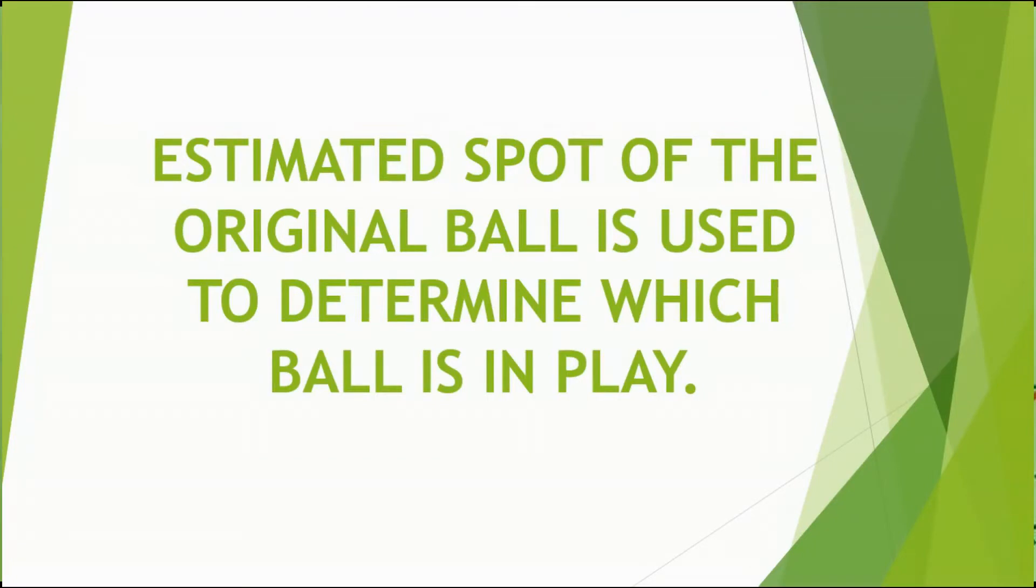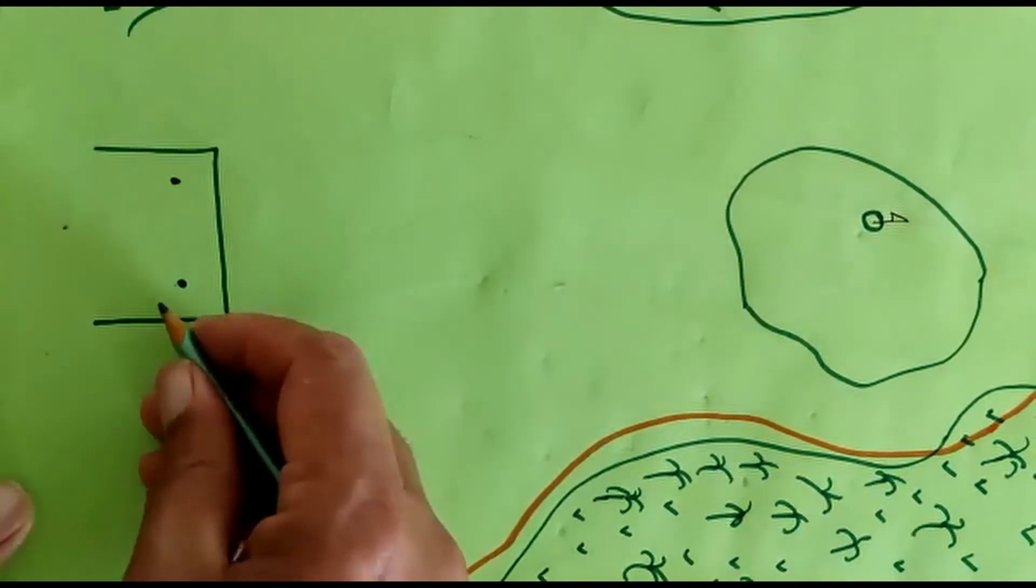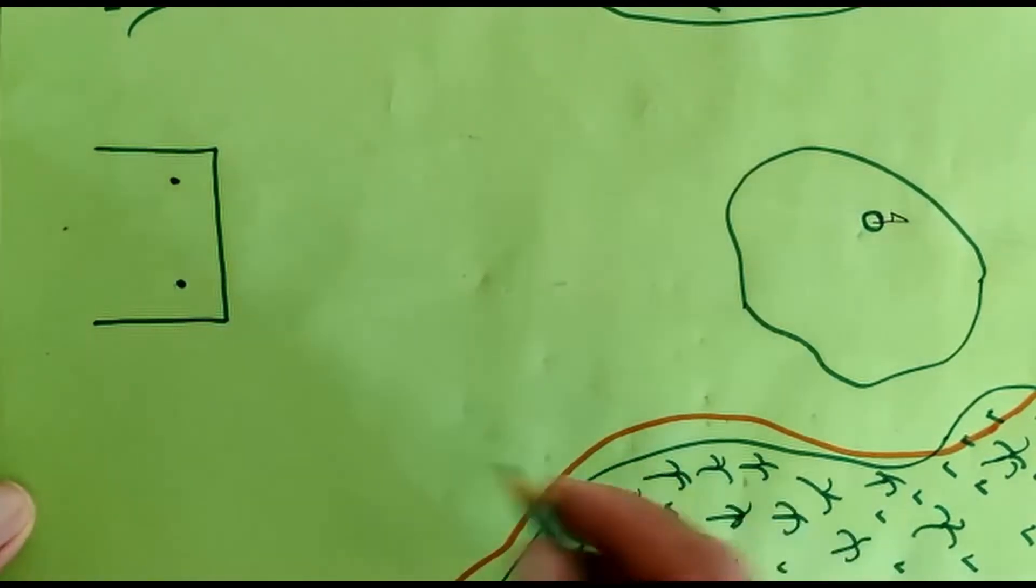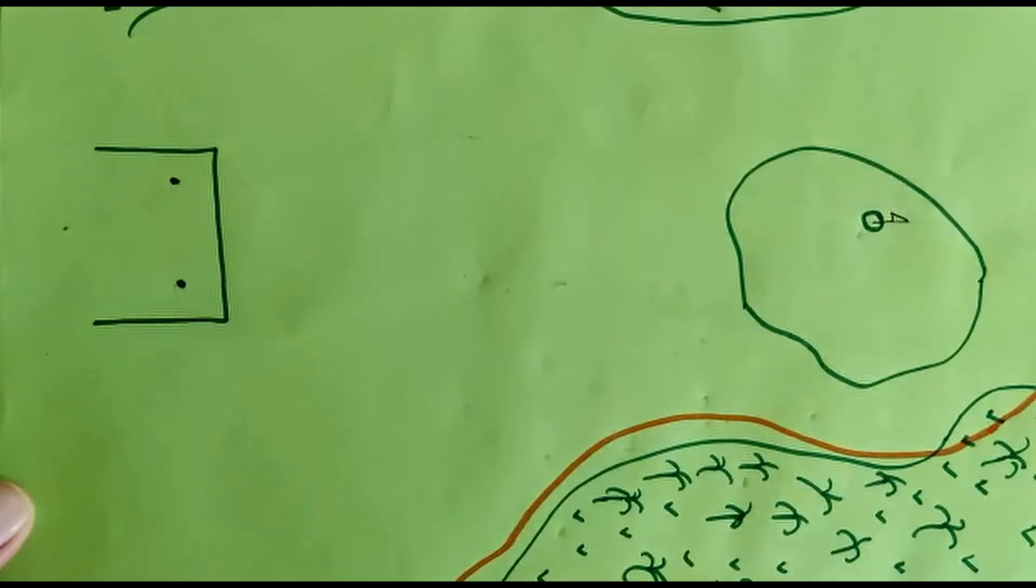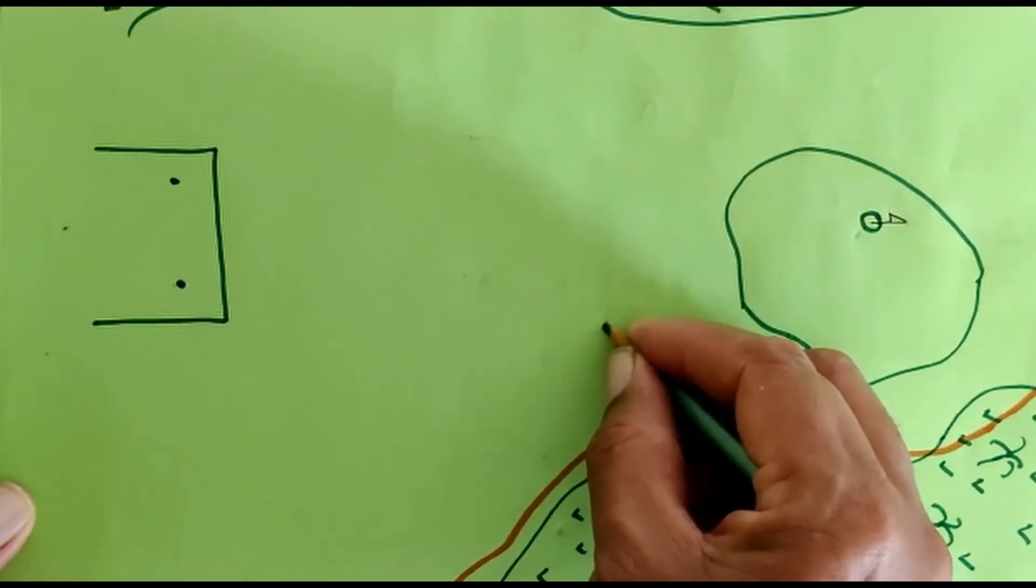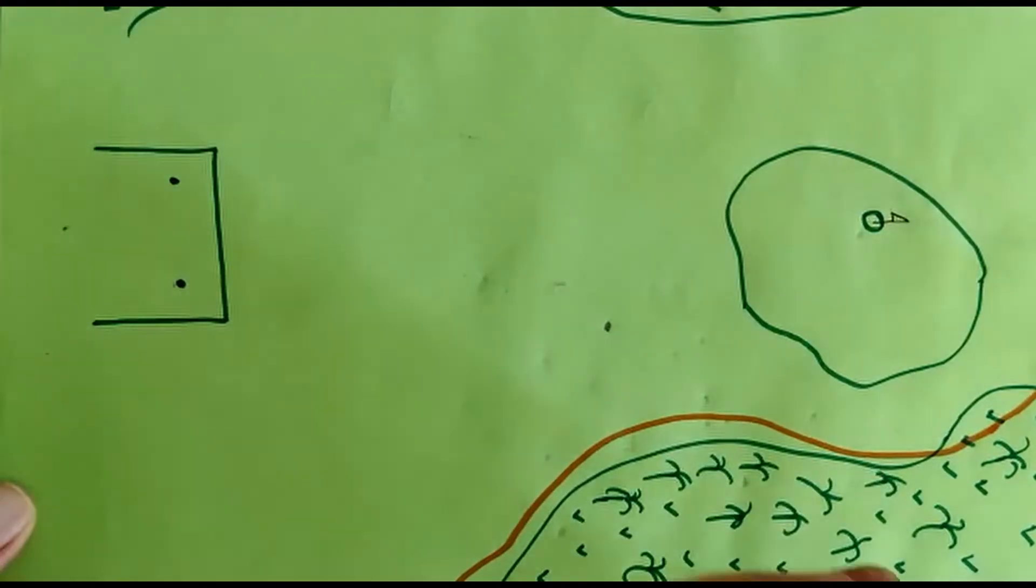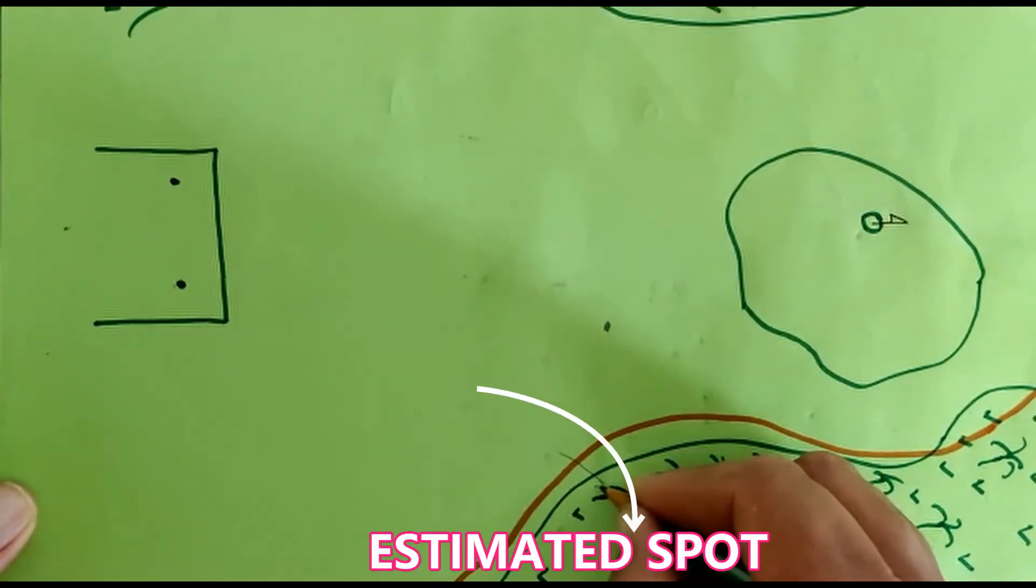Estimated spot of the original ball is used to determine which ball is in play. A player, believing that his ball could have gone out of bounds, hits a provisional ball from this area and the ball goes somewhere here. He estimates that his original ball had gone out of bound from this area.